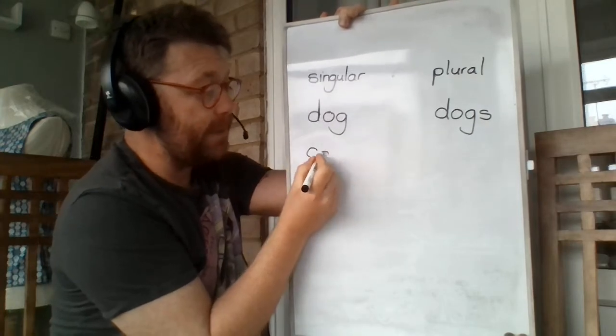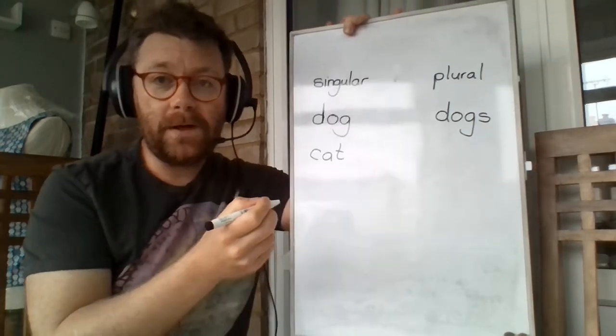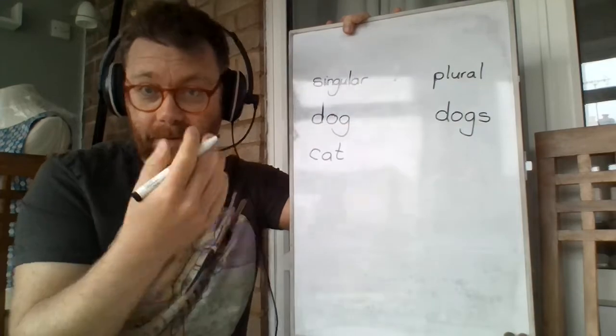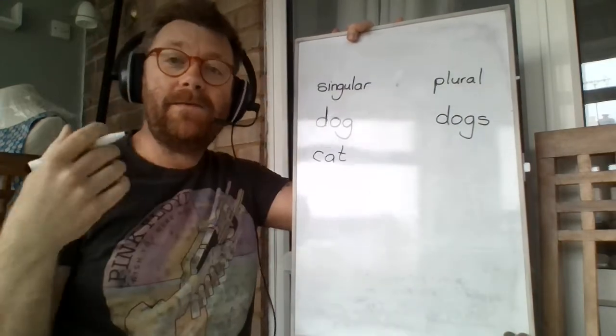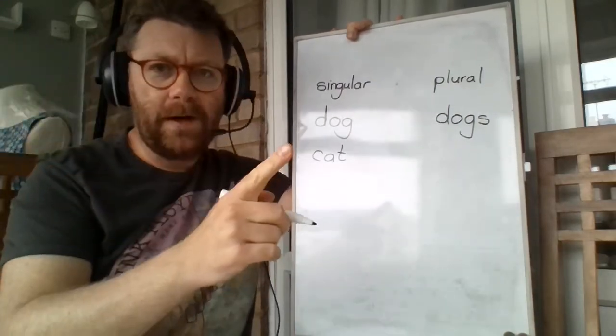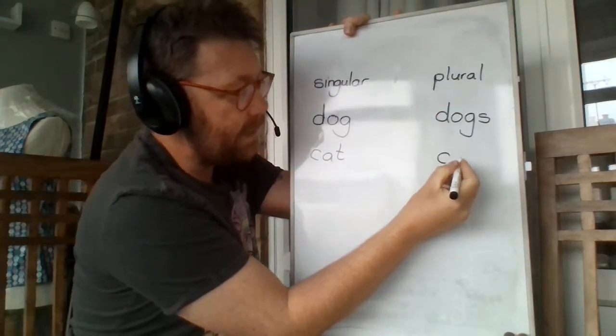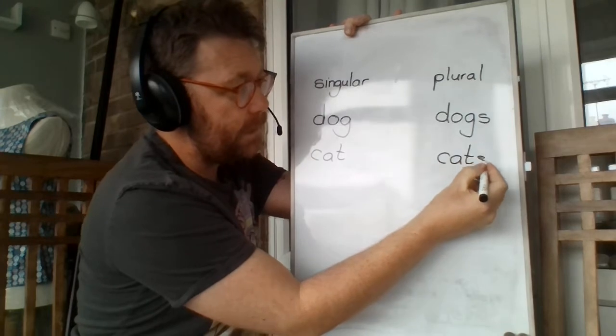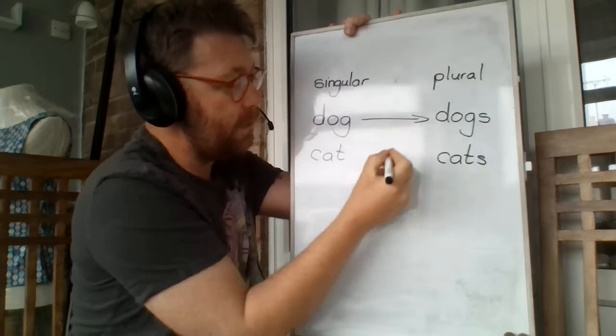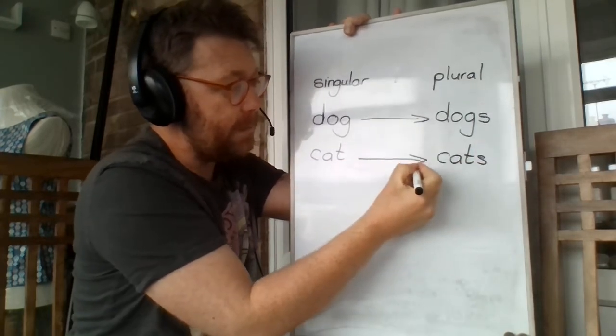Similarly, if I said, oh look, there is a cat, then it'd just be one cat. But if I said, oh look, there are more than one cat. That means there are some cats. So we'd just add an S, aren't we? So dog becomes dogs. Cat becomes cats.